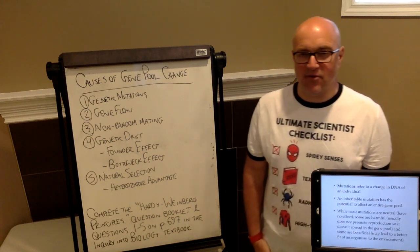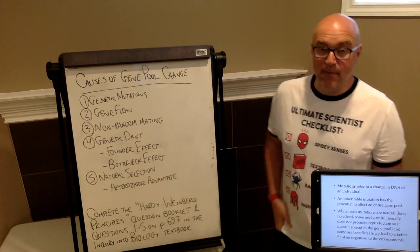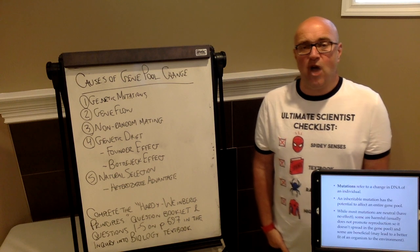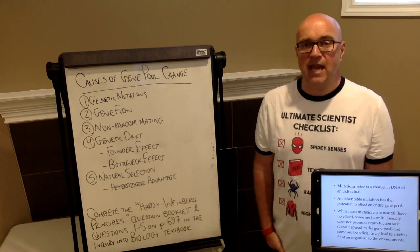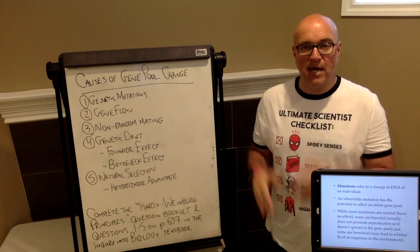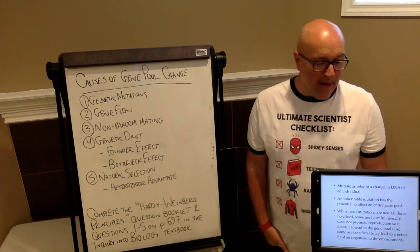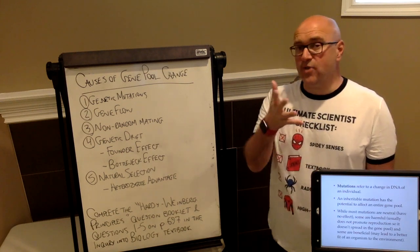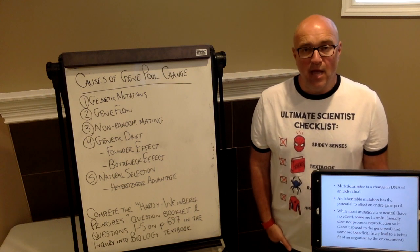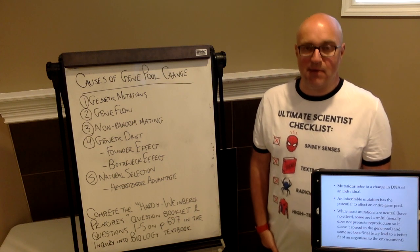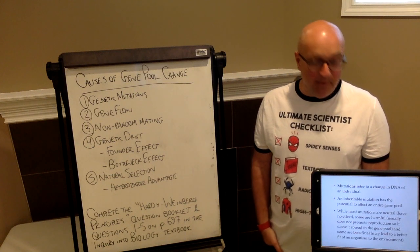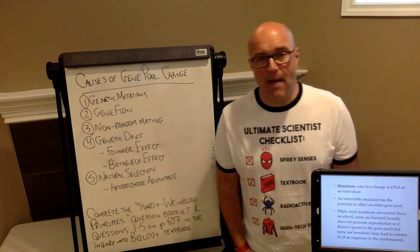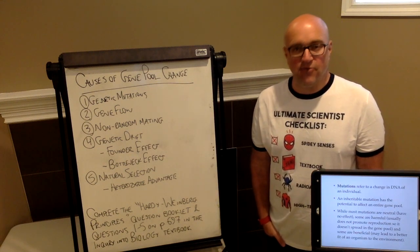First, mutations. We understand that DNA is constantly undergoing mutations. When we copy DNA, when cells divide, there are always going to be a couple of little copying errors here and there. Sometimes or most times, these mutations are going to be neutral. In a few cases, they can be detrimental to the organism. And in some cases, they can be beneficial.